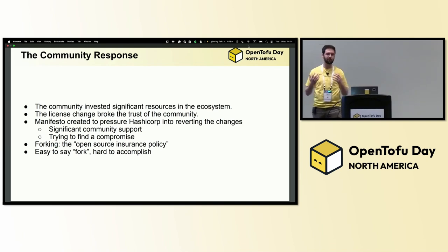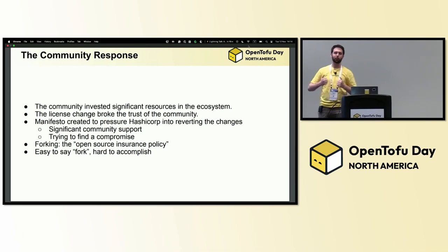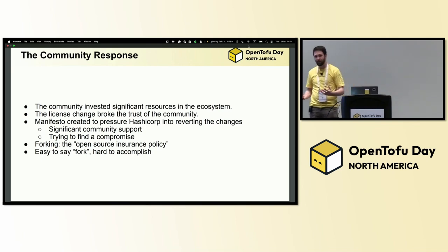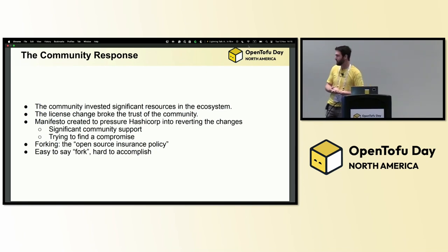This is something that the community depends upon, that we want to build on, and we want it to continue to be open. We realized that forking is the last option — we should try to reconcile before we take that large step. Unfortunately, the manifesto in trying to find a compromise fell on deaf ears, as far as I'm aware. We weren't really left with much of an option, so we had to invoke our insurance policy, which is forking.